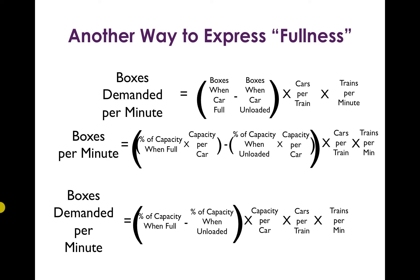We pull out one more term called capacity per car. Instead of saying there are 20 boxes when the car is full, we say the capacity per car is 20, and when the car was full it was at 100% capacity — multiplying out to the same number of 20. Similarly, instead of saying there were 15 boxes when unloaded, we say the car has a capacity of 20 and was at 75% capacity when unloaded, giving the same number of 15. We're just expressing box counts as a percentage of capacity, and we pull capacity per car out of the parentheses alongside cars per train and trains per minute.